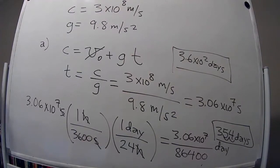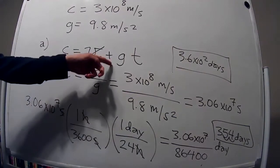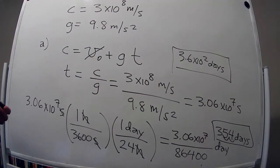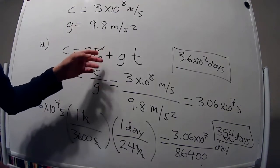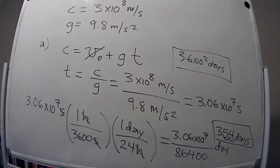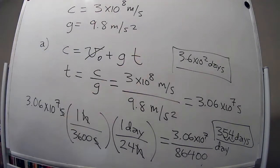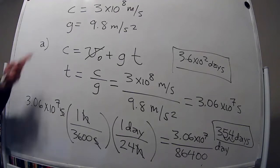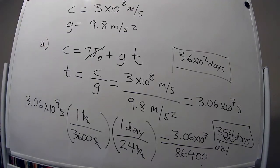So if you fall with the acceleration produced by gravity on Earth — 9.8 m/s² — for about a year, you will reach the speed of light, at least in the Newtonian universe. In Einstein's universe you would never actually get there, but classically it takes about a year. Either the speed of light is very large, or the acceleration due to gravity on Earth is pretty small.